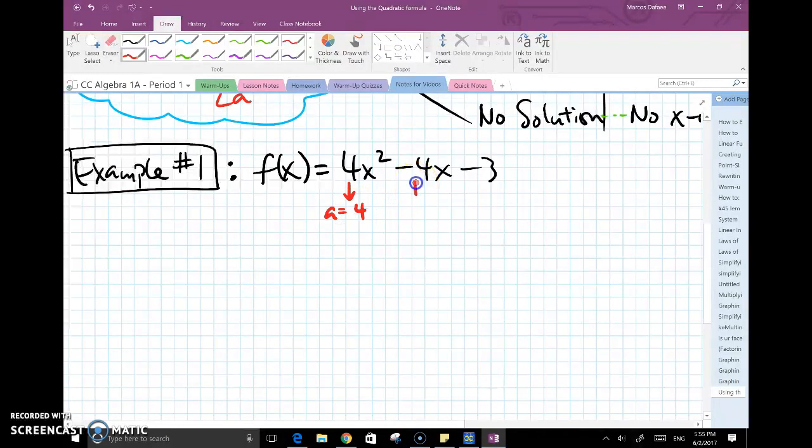Before I jump into the formula I need to first identify my a, which is 4, my b, which is negative 4, and my c, which is negative 3. Now that I know what each of these variables represent, I can go ahead and substitute them directly into the formula itself.